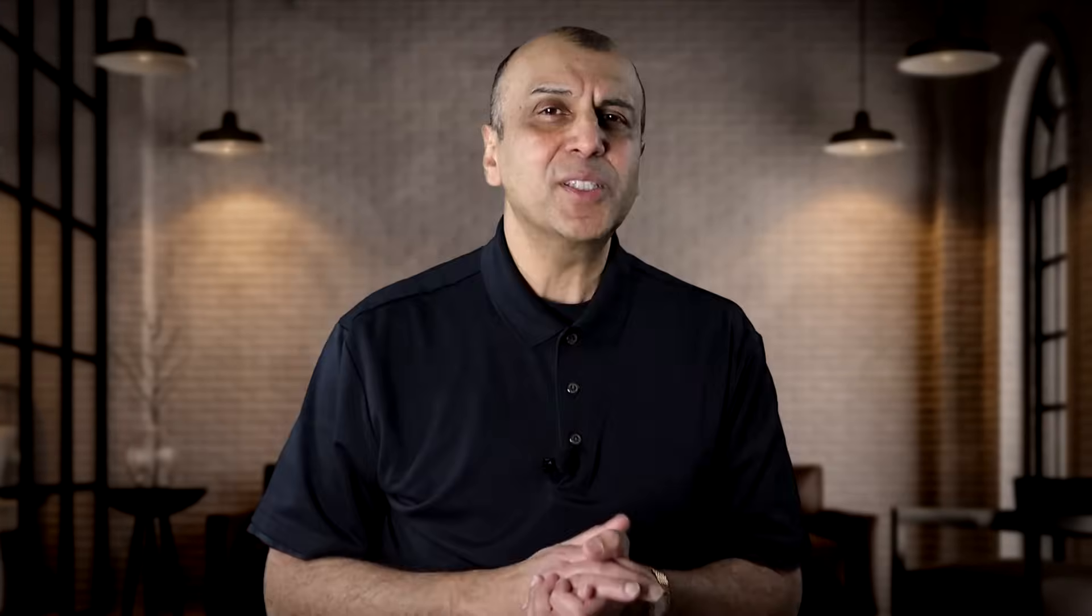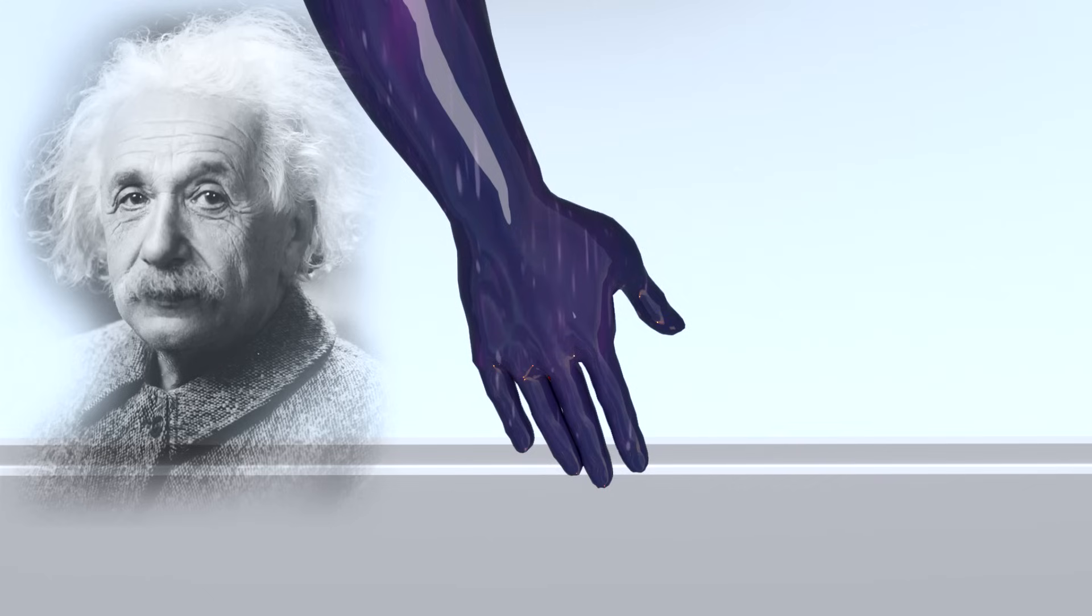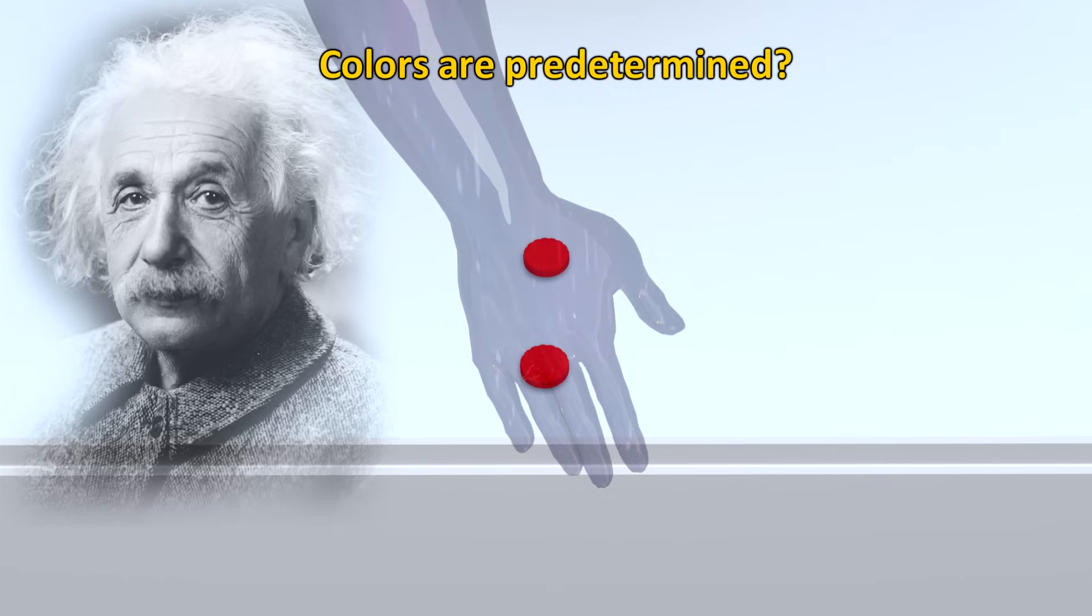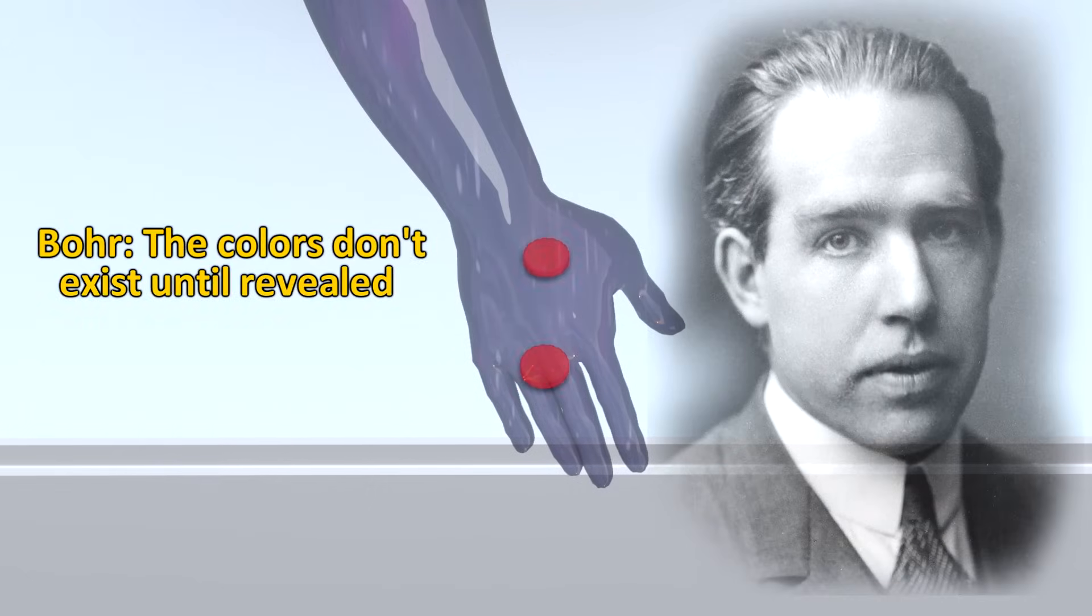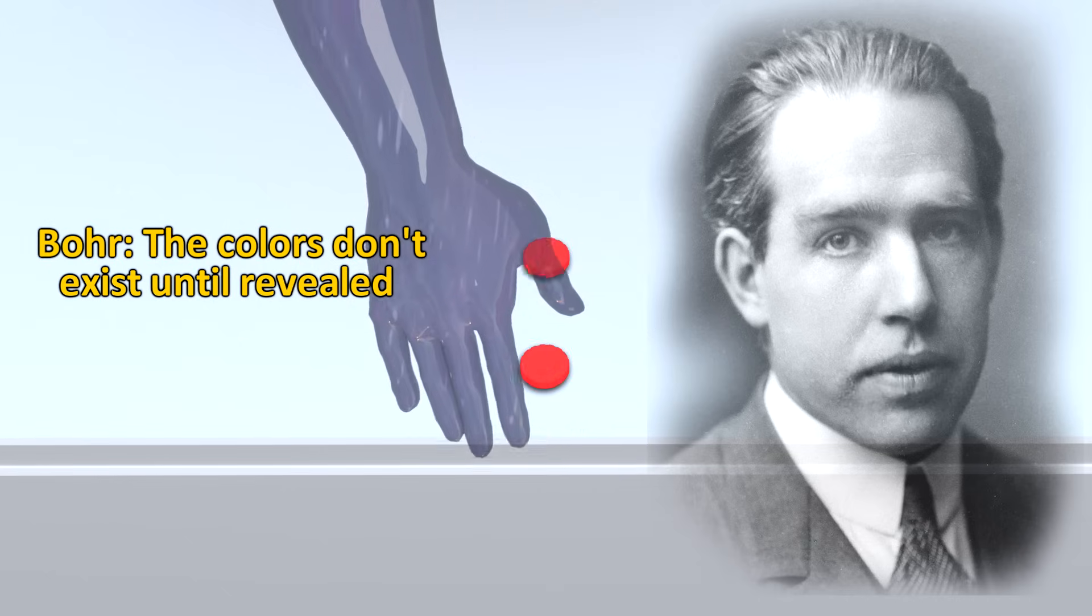So I conclude that perhaps the universe has rigged the game against me. This is what Einstein suspected was happening, that the checker pieces were rigged. He believed that the colors of the pieces were predetermined and that this information had been known from the very beginning when the two pieces were together. Niels Bohr's idea on the other hand was that the red and black don't even exist until the piece is turned over.